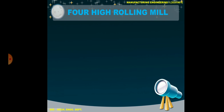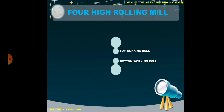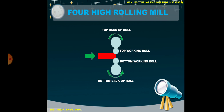Moving on to the 4-high rolling mill. A 4-high rolling mill consists of 2 small rollers and 2 big rollers, named as bottom working roll, top working roll, bottom backup roll, and top backup roll. Both the bottom backup roll and top backup roll rotate in opposite directions. The workpiece passes between the top working roller and bottom working roller, reducing its thickness.